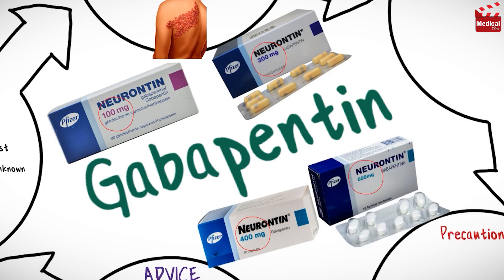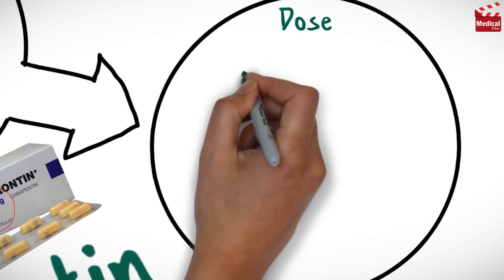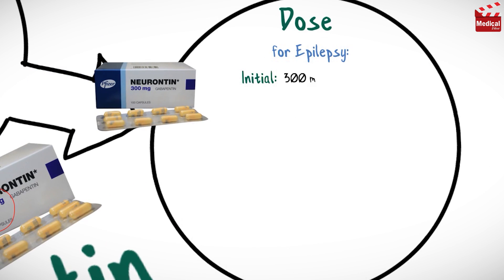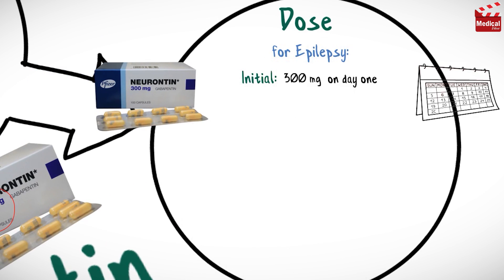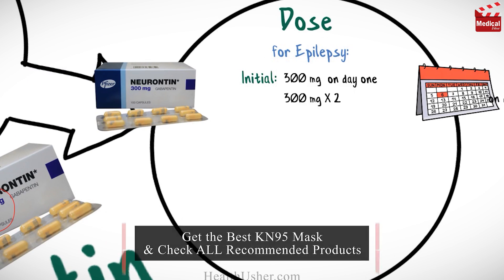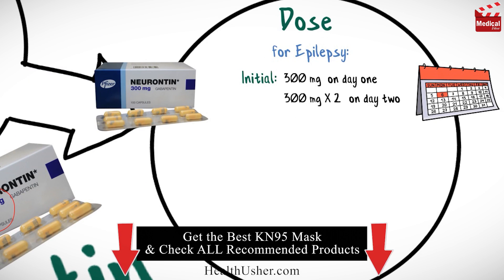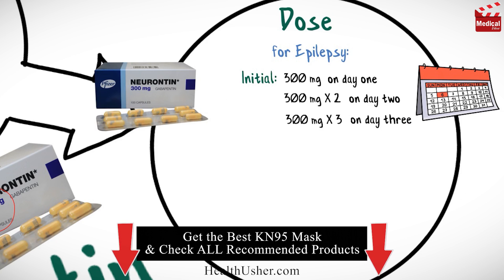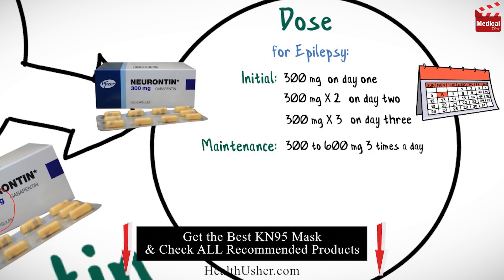It is available as 100, 300, 400, and 600 milligram tablets. The usual initial dose for epilepsy in adults is 300 milligrams on day one, then 300 milligrams two times per day on day two, then 300 milligrams three times a day on day three. However, many patients tolerate initiation with 300 milligrams two or three times a day.